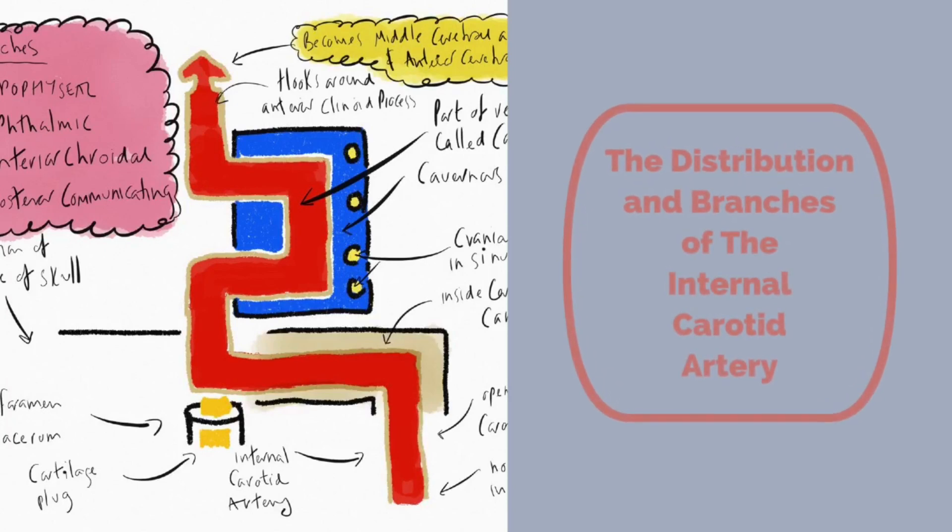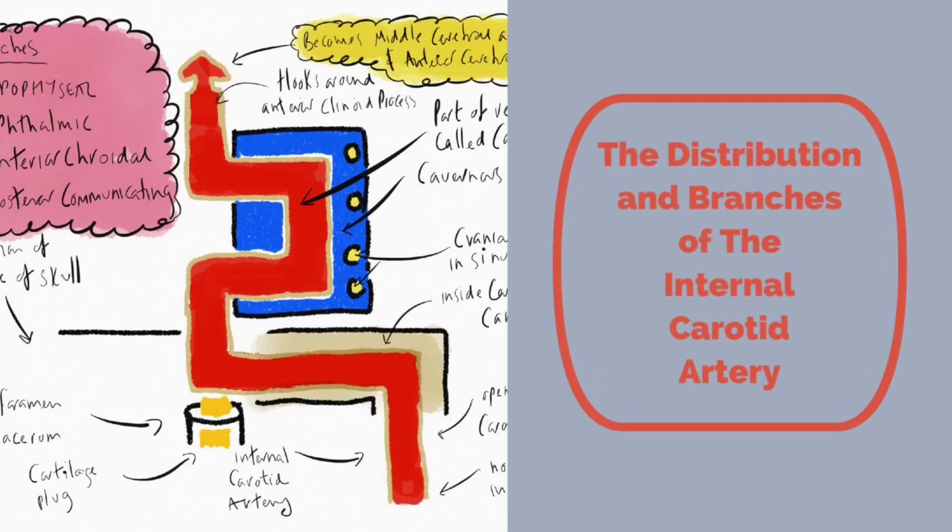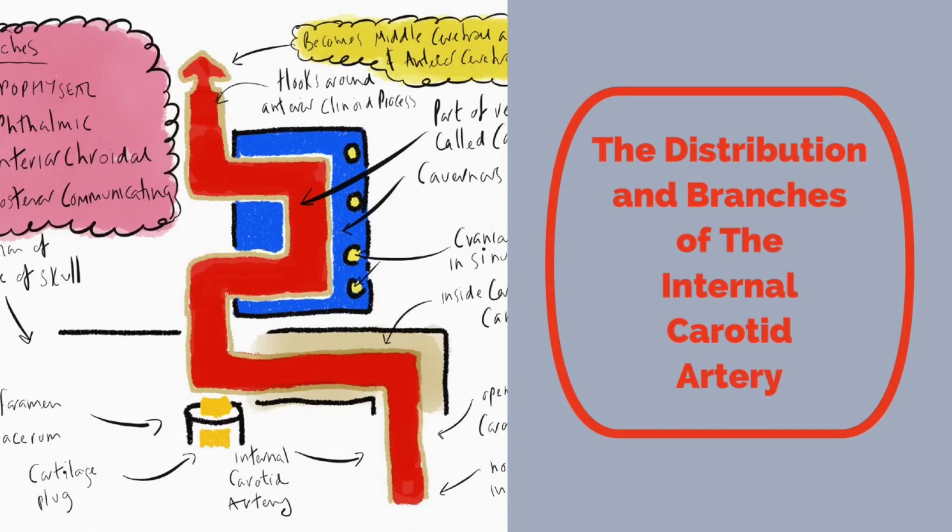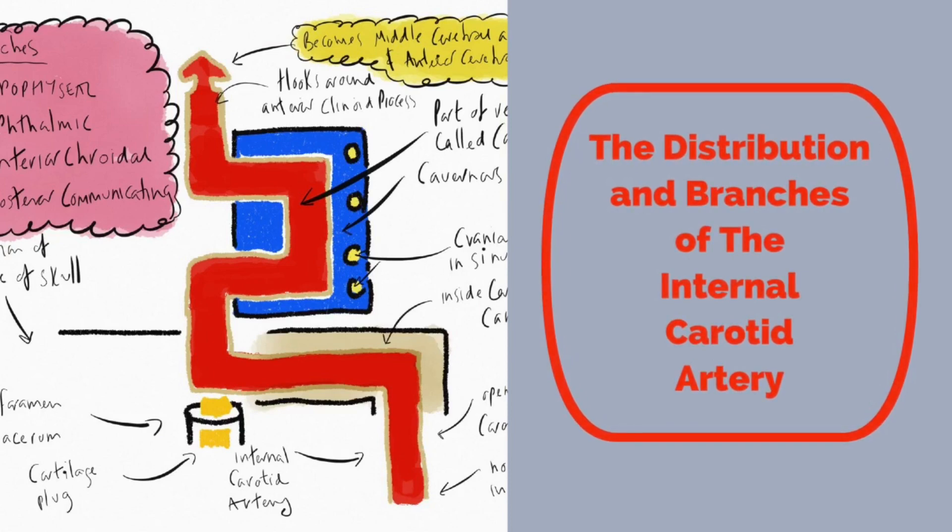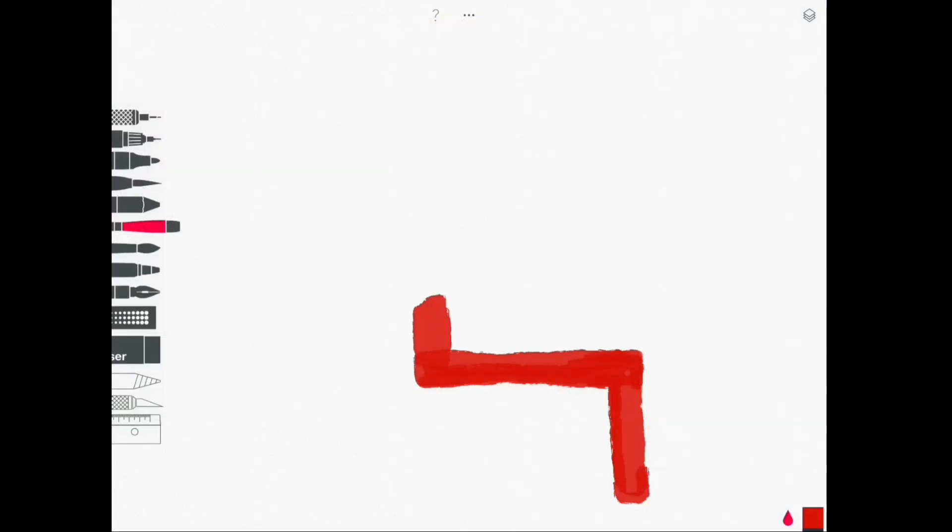Hello and welcome to this video covering the distribution of branches of the internal carotid artery. We're going to take a look at the course this vessel takes as it passes through the skull, gives off some branches and terminates as the anterior and middle cerebral arteries which are of course the anterior cerebral circulation.